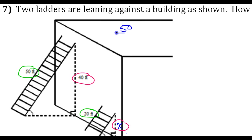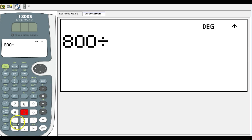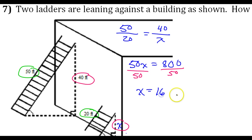So that would be 50 over 20 is equal to 40 over x. Once you cross-multiply, you have 50x is equal to, well, 2 times 4 is 8, so that should be 800. Then we're going to divide by 50 on both sides. Now, that's going to be 16. So, 16 feet. Don't forget your units.